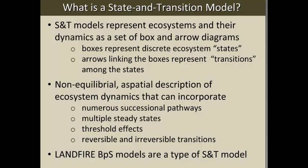State and transition models are often called box and arrow diagrams. They represent ecosystem dynamics using boxes to represent discrete ecosystem states — we might call them successional stages or seral stages — things you can actually recognize on the ground, which is useful because you can tie this work to mapping or spatial modeling. Linking the boxes are arrows that represent transitions among those states. Those transitions can be successional patterns based on growth, competitive outcomes, or things like disturbance.